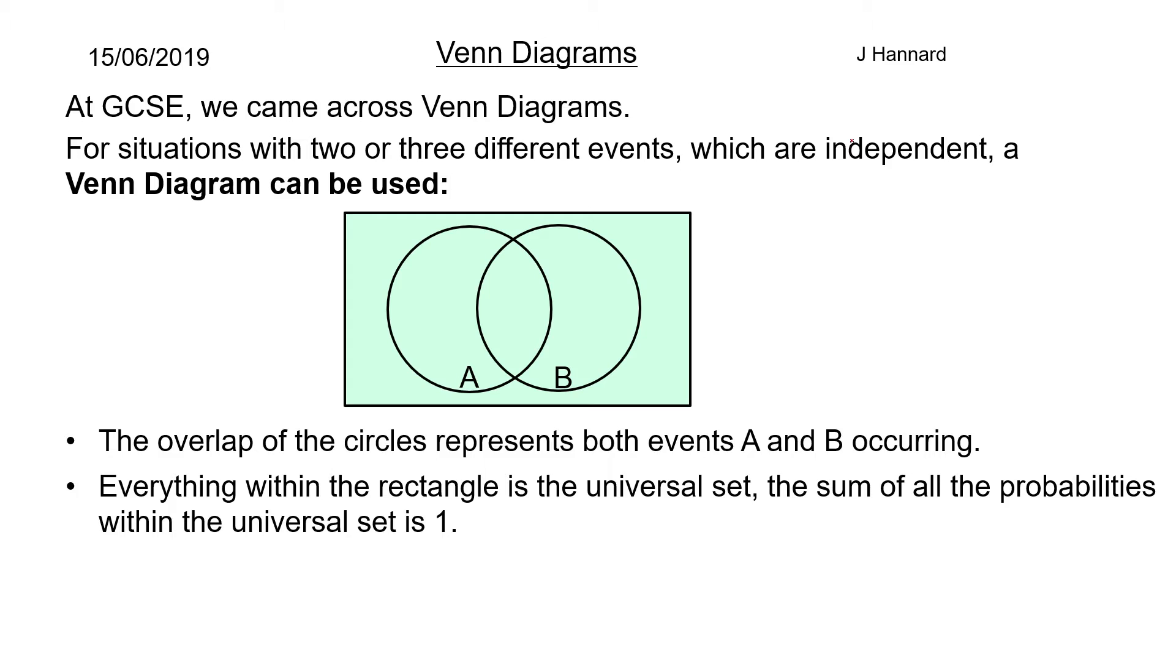So obviously you've got the probability of A, you've got the probability of B, you've got the probability of it being A and B and the probability of it being neither, and all of those add up to 1.